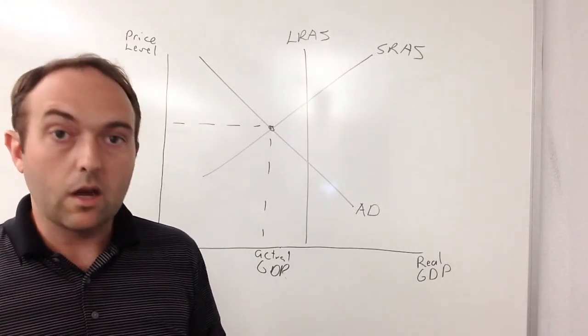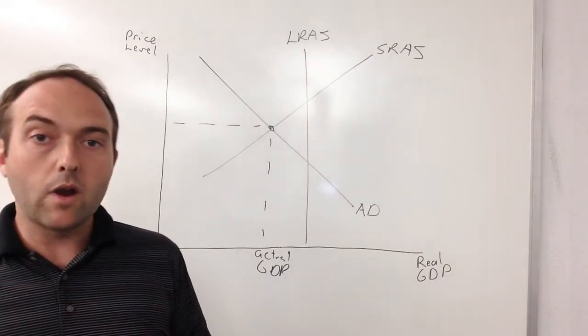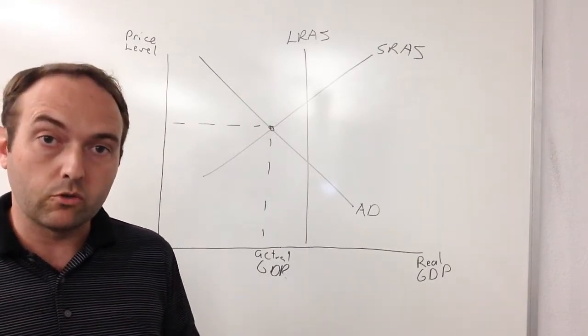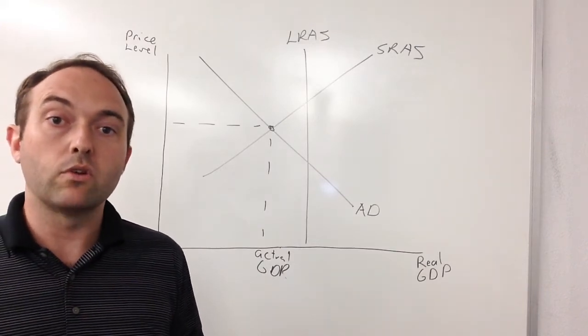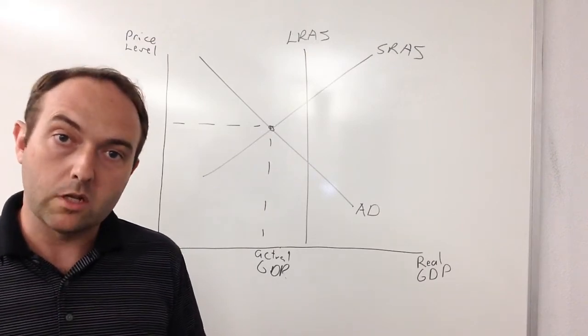As you can see on this graph, I have our actual production falling short of our long-run aggregate supply. Our long-run aggregate supply represents how much we could produce. In this graph, we're showing a country that has a recessionary gap. That is to say our actual production is less than our potential.